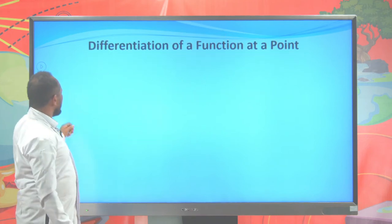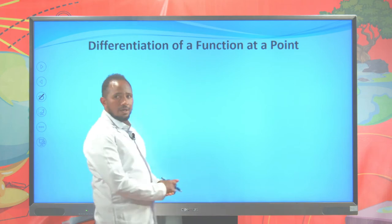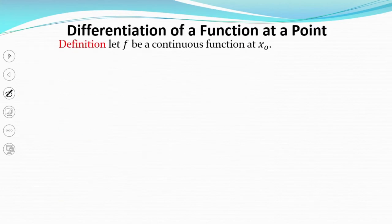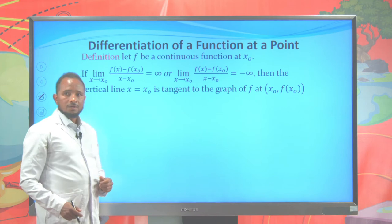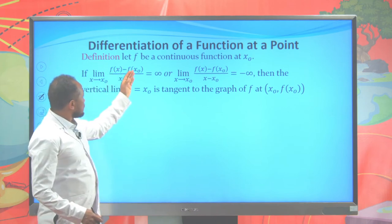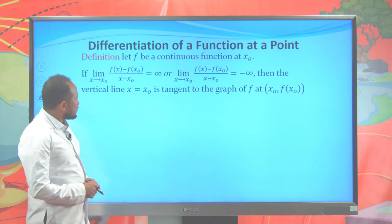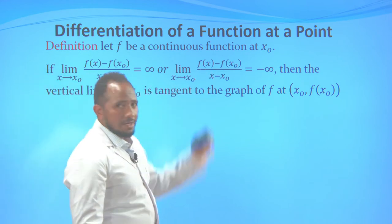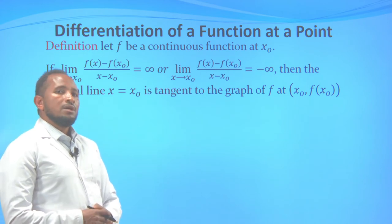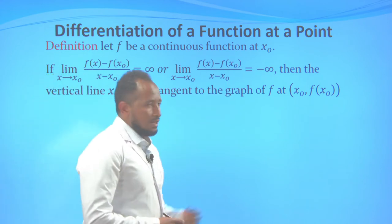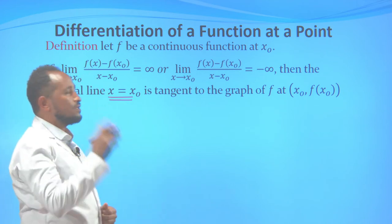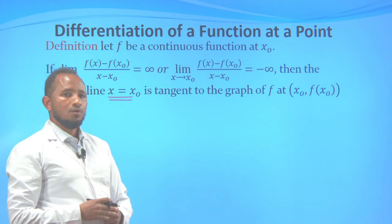Let's see another part: differentiability of a function at a point. Now let f be a continuous function at x naught. If the limit of f of x minus f of x naught over x minus x naught, where x approaches x naught, equals infinity, then the tangent line to the graph at x naught comma f of x naught is a vertical line.